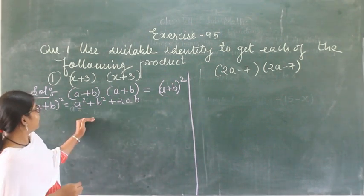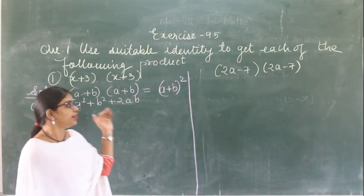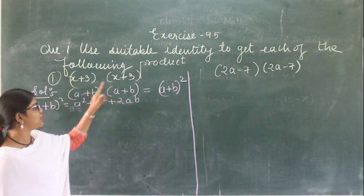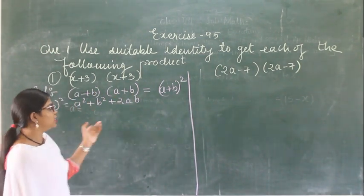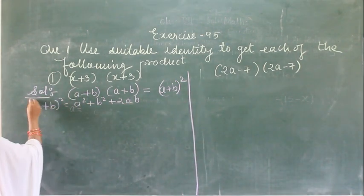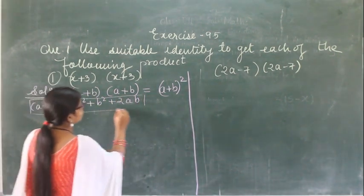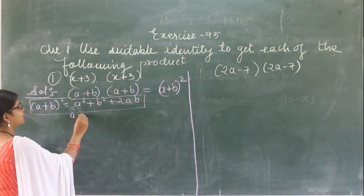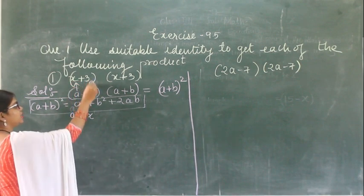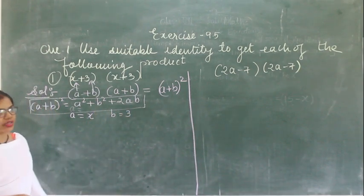The formula for (a plus b) whole square is: a square plus b square plus 2ab. So we just have to identify which identity to use. As you can see, this is in the form of (a plus b) and (a plus b), so it becomes (a plus b) whole square. In this question, what is a? Here a is x. And what is b? b is 3.